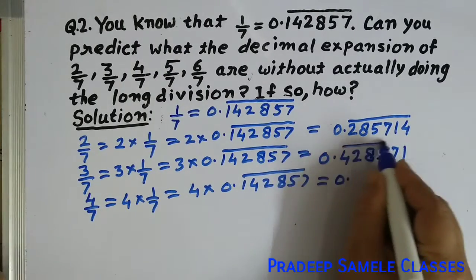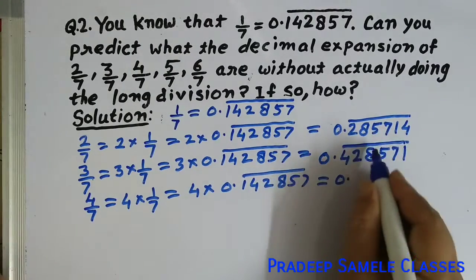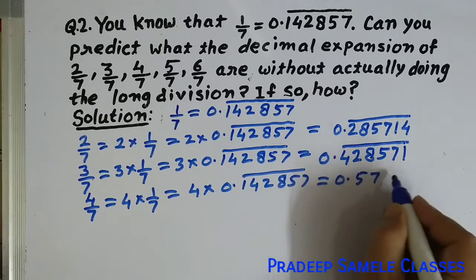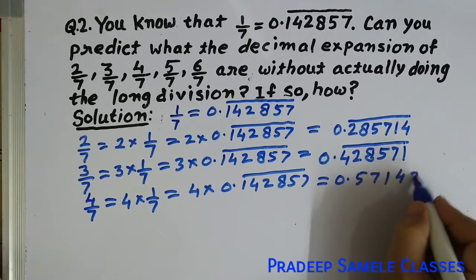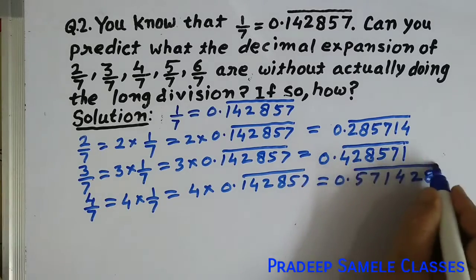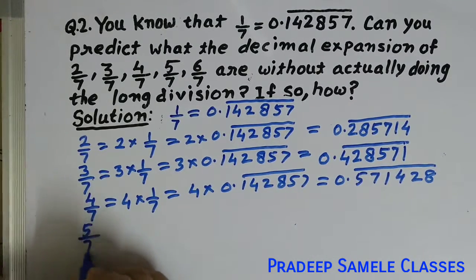After multiplying, we get 0.571428 bar. We write the bar notation on top each time.